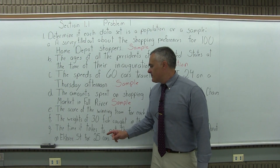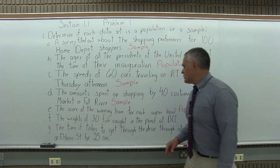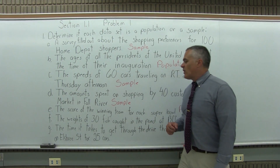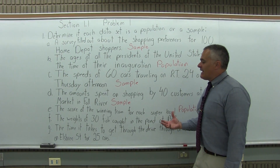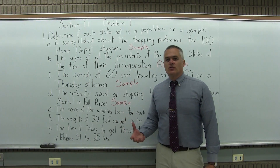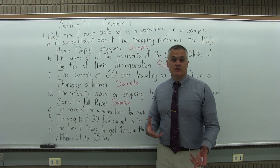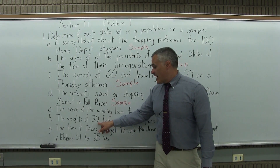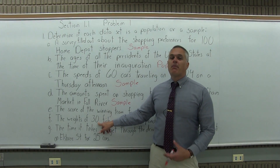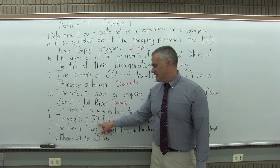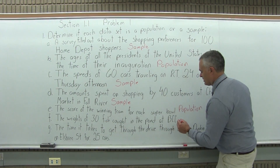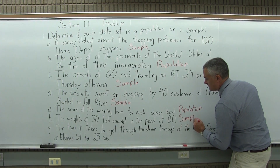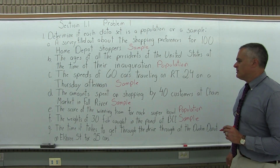Part F: the weights of 30 fish caught in the pond at BCC, right out in front of G-building. What is it likely that this study is interested in? Determining the weights of all the fish in the pond at BCC — but catching all the fish would be impractical. These 30 would be part of the group you're interested in studying, which makes that a sample.